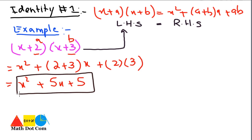If we did this the other way — by multiplying each element of the first expression with the second expression one by one — it would take more time compared to applying the identity. So this is how you can make use of identities at places where you can apply them, to avoid following long calculations.